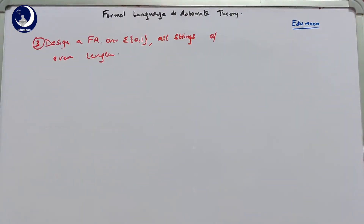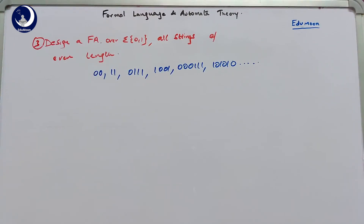The third example is designing a finite automata over sigma {0, 1} where all strings have even length. The restriction is not over the number of zeros or ones, but the total number of symbols in the string should be even. The length can be 0 (epsilon), 2, 4, 6, 8, and so on. For example, strings like 00, 11, 011, 1001 — any combination with 2, 4, 6, or 8 symbols — the total length of the string should be even.